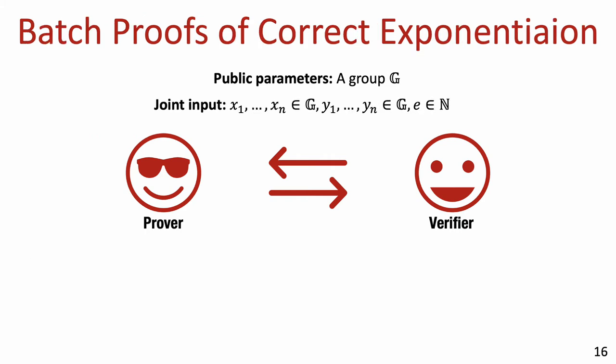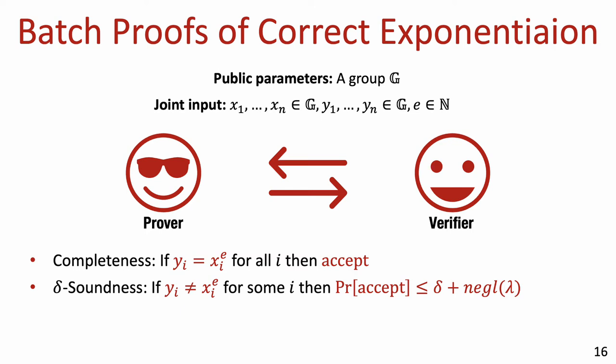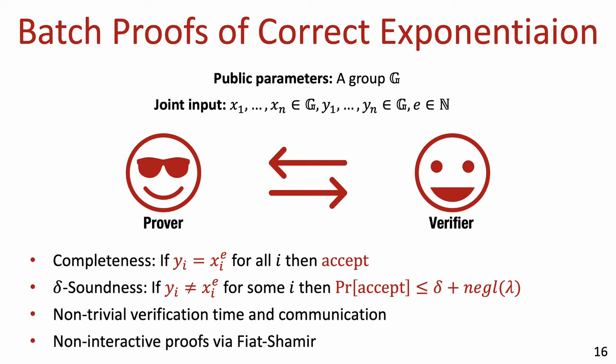In a batch POCE, we have n pairs of group elements, and the prover tries to convince the verifier that yi equals xi raised to the power of e for every i. As before, if this is the case the verifier accepts with probability 1, and the delta soundness requirement is that if this is not the case, the verifier accepts with probability at most delta plus a negligible function of lambda. In the batch setting, we want verification time which is non-trivial not only with respect to direct computation, but also with respect to the naive approach of applying a separate POCE to each pair. We also want overall communication to be non-trivial in the same respect. A non-interactive batch POCE can be obtained from an interactive one using the Fiat-Shamir transform, and all of our compilers preserve compatibility with Fiat-Shamir.